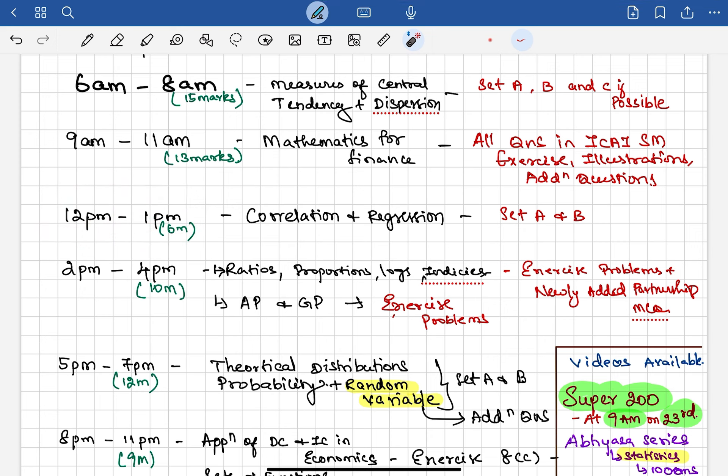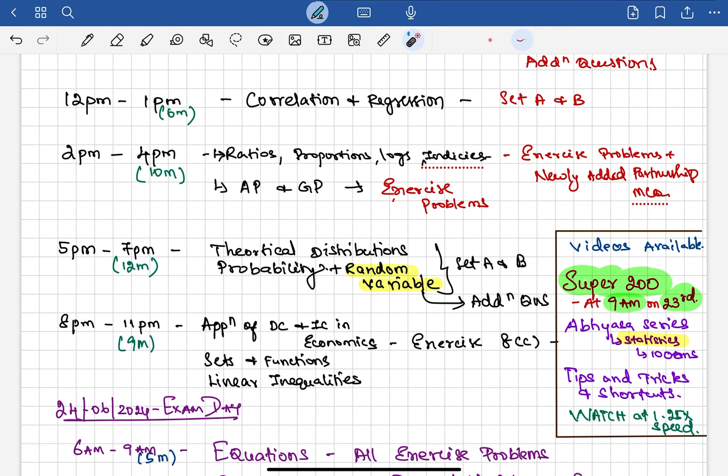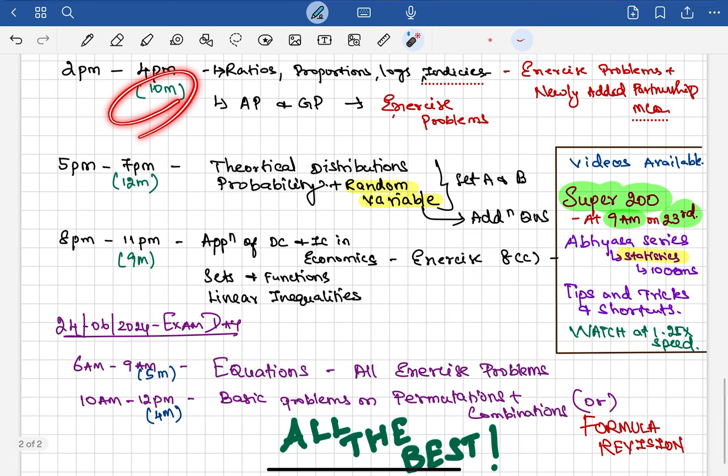From 12 PM, take a one-hour break. After that, 12 PM to 1 PM, go with Correlation and Regression—Set A and Set B—six marks guaranteed within one hour. Then 2 PM to 4 PM, do Ratios, Proportions, Logs and Indices, and the concept of Allegations and Mixtures. Do that problem in the exercise and illustration. Focus on AP and GP exercise problems. This Allegations and Mixtures we have already covered in Tips and Tricks videos. The newly added questions in Partnership in MCQs in additional question bank, we have uploaded a video in English. You can watch at 1.25x or 1.5x speed. This 2 to 4 PM session will give you 10 marks easily.